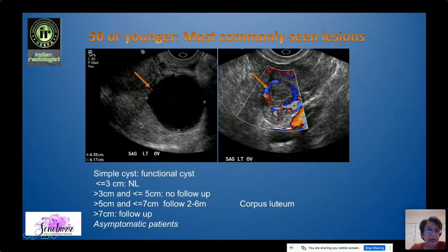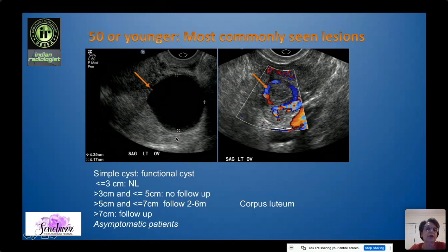Between five and seven centimeters, if it's truly simple, most will recommend a follow-up in two to six months. Over seven centimeters, definitely follow up and possibly suggest another imaging modality, because above this size it is really difficult for ultrasound to confirm that this is a simple cyst.